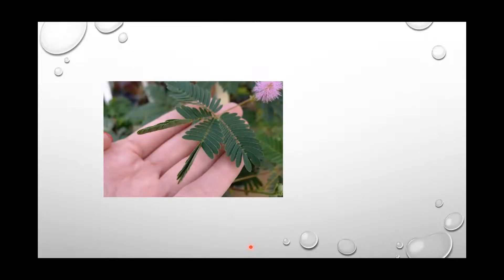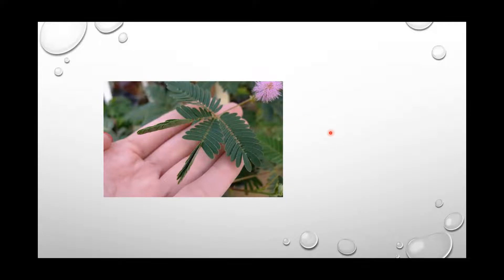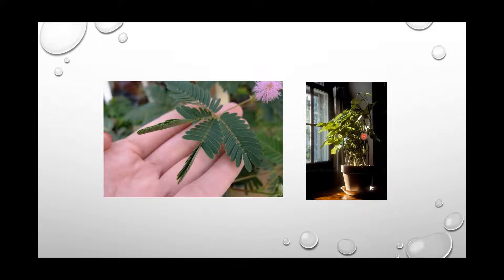We will now move to control and coordination in plants. This familiar plant is called the touch-me-not plant, commonly known as touch-me-not; its biological name is Mimosa pudica. When we touch it, you can see that half of the plant still has leaves open. In another picture, the plant is kept in a dark room with only one window open — the plant is bent towards the sunlight. The leaves open due to touch, and the plant bends towards sunlight — these are coordinated, controlled movements of the plant.